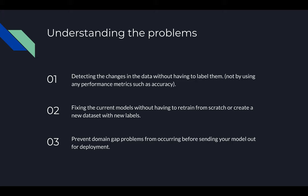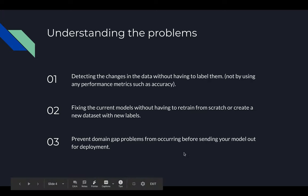Within this big problem, we are concerned with three sub-problems. The first is detecting the changes in the data. The second is fixing current models without having to retrain them from scratch. The third is preventing this problem from occurring, which is commonly known as domain generalization.